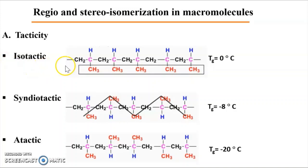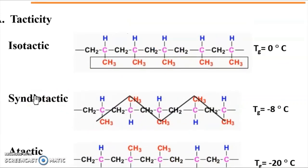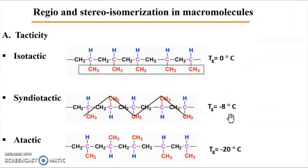In the case of isotactic, all the Z-substituents are on the same side of the carbon backbone. In syndiotactic, the Z is distributed in an alternating way along the backbone chain. In atactic, the substituent is distributed randomly. Since we have this structural variation, it will surely influence the properties of the given polymer.